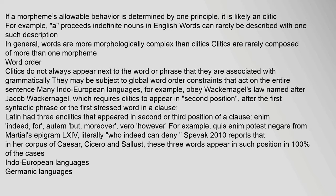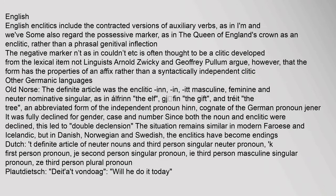From Martial's Epigram LXIV: 'quis enim potest negare' — literally, 'who indeed can deny'. In Caesar, Cicero, and Sallust, these three words appear in such position in 100% of cases. English enclitics include the contracted versions of auxiliary verbs, as in 'I'm' and 'we've'. Some regard the possessive marker — as in 'the Queen of England's crown' — as an enclitic rather than a phrasal genitival inflection. The negative marker '-n't' is often thought to be a clitic developed from 'not', though Zwicky and Pullum argue it has the properties of an affix.